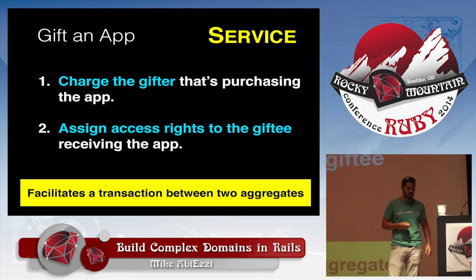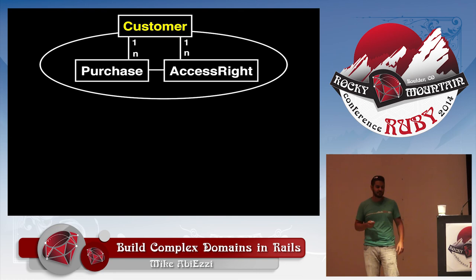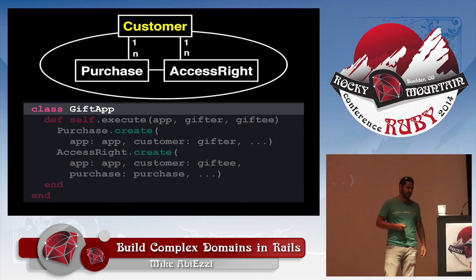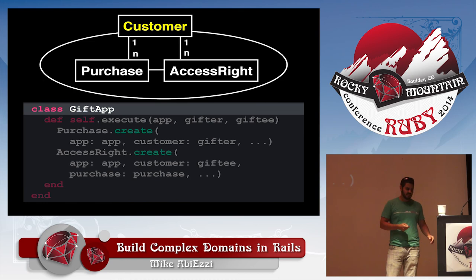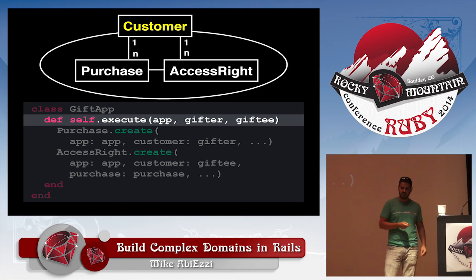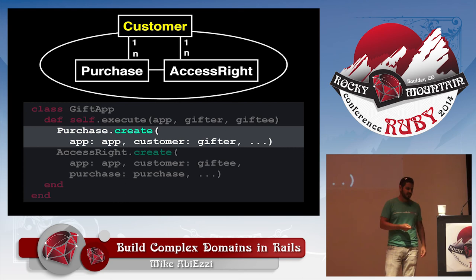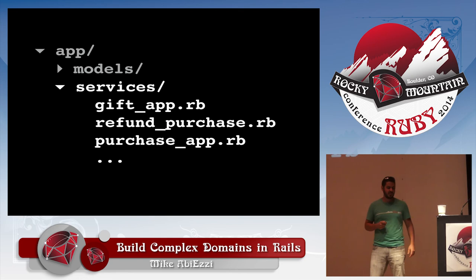The domain service facilitates a transaction between two aggregates. Our model has a customer with purchases, but we need to separate the concept of purchasing from actually being able to use an app. So we introduce another model called access right. A domain service is a simple Ruby object whose name describes the behavior the domain is trying to fulfill. It doesn't inherit from anything. It has an execute method — just one operation. We take in everything we need: the app, the gifter, and the giftee. We create a purchase record for the gifter and an access right for the giftee. You'll likely want to use database transactions as well. In our Rails directory, we create a services folder with all these domain services, and now we can see all of the cross-aggregate transactions.